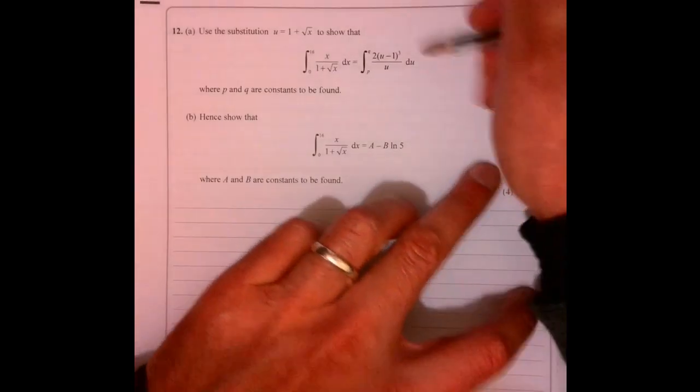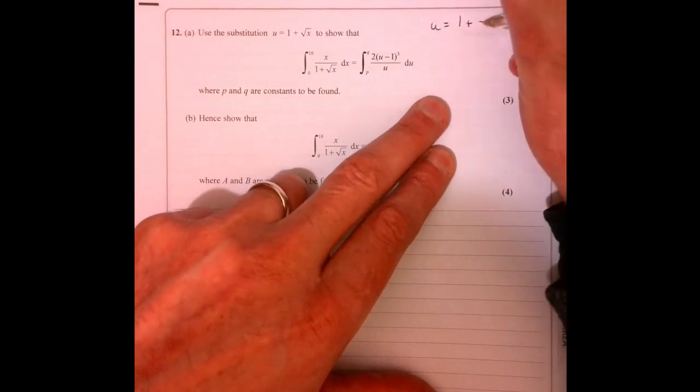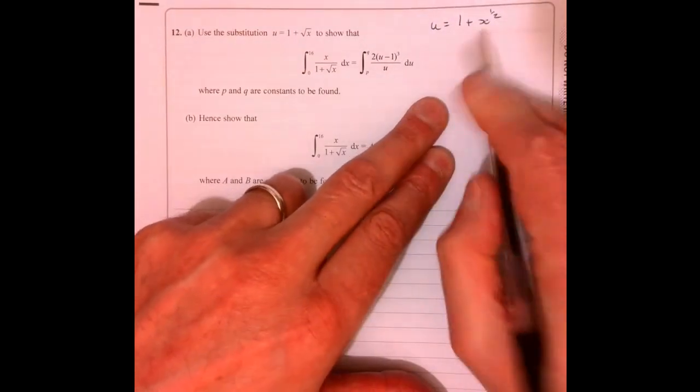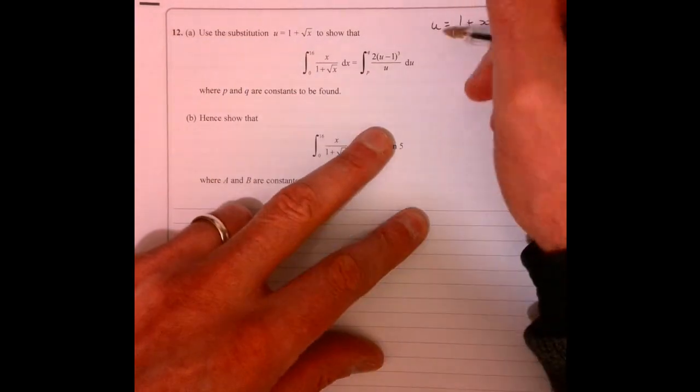Question 12. Right, here we go. So let's start off with this u equals 1 plus root x. That's going to be the first thing I'm going to change is just how I write that. Okay, we need a substitution.